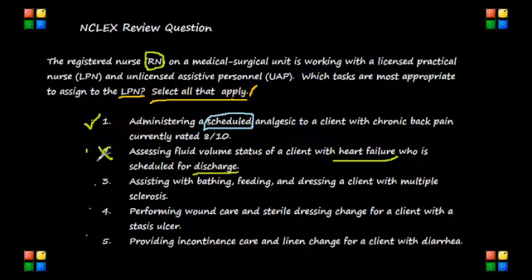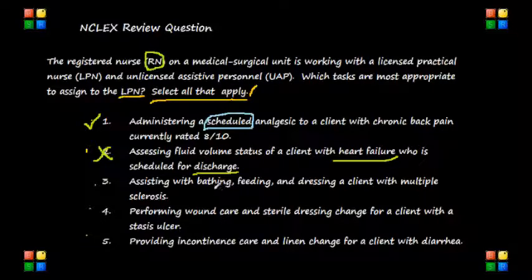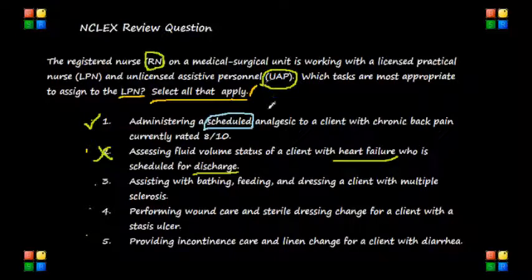Now let's look at options three and five: assisting with bathing, feeding, and dressing a client with multiple sclerosis, and providing incontinence care and linen change for a client with diarrhea. Although these tasks can safely be carried out by the LPN, assigning them would underutilize the LPN. These tasks should be delegated to the unlicensed assistive personnel, or UAP, for effective use of resources. So options three and five are not appropriate to assign to an LPN.